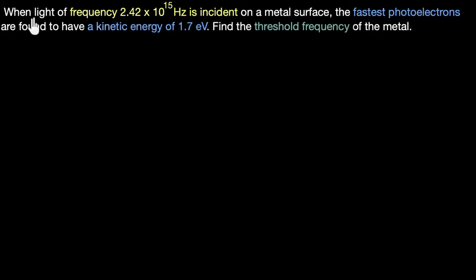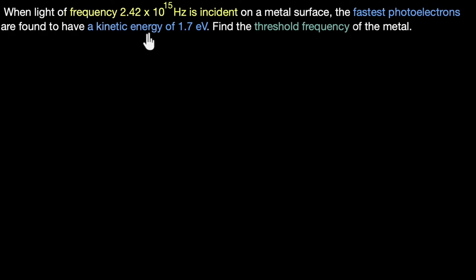Let's solve a problem on the photoelectric effect. When light of frequency 2.42 × 10¹⁵ Hz is incident on a metal surface, the fastest photoelectrons are found to have a kinetic energy of 1.7 electron volts. Find the threshold frequency of the metal.